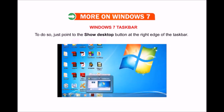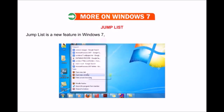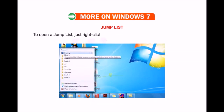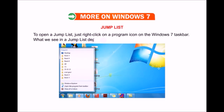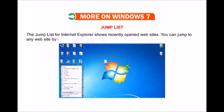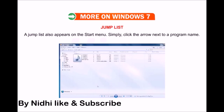Now let us look at the Jump List — a new feature in Windows 7 which takes you directly to the documents, pictures, songs, or websites that you use frequently. To open a Jump List, right-click on the program icon on the Windows 7 taskbar. What you see in a Jump List depends entirely on the program — for example, the Jump List for Internet Explorer shows recently opened websites, and you can jump to any website by clicking on it. A Jump List also appears on the Start menu; simply click the arrow next to a program name.